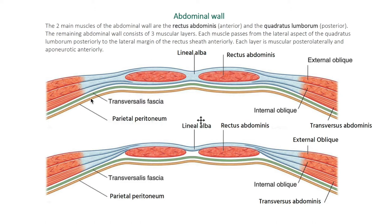The remaining abdominal wall consists of three muscular layers. Each muscle passes from the lateral aspect of the quadratus lumborum on the posterior side, and comes out from the posterior aspect to the lateral margin of the rectus sheath. So these three muscles come from the posterior side and attach to the lateral side of the rectus sheath.